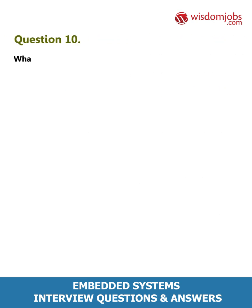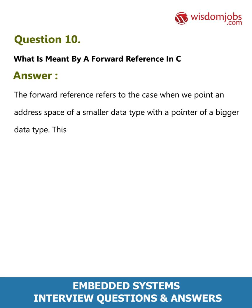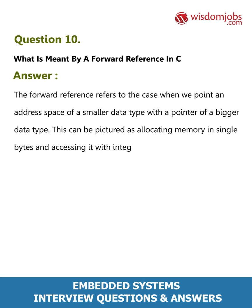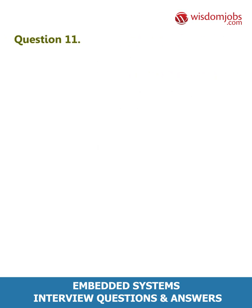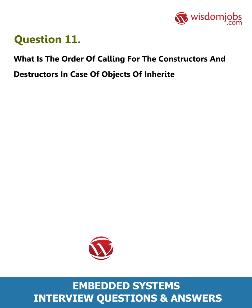Question 10: What is meant by a forward reference in C? Answer: A forward reference refers to the case when we point to an address space of a smaller data type with a pointer of a bigger data type. This can be pictured as allocating memory in single bytes and accessing it with an integer pointer as chunks of four bytes.